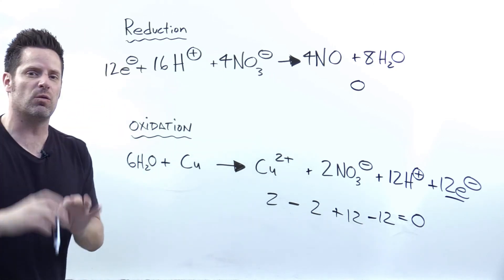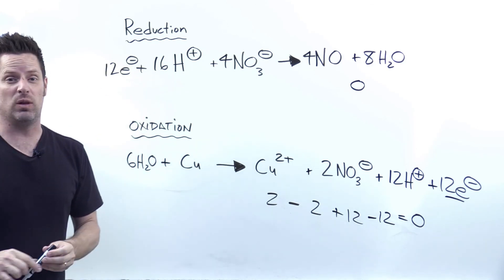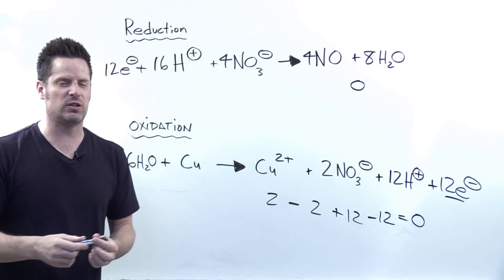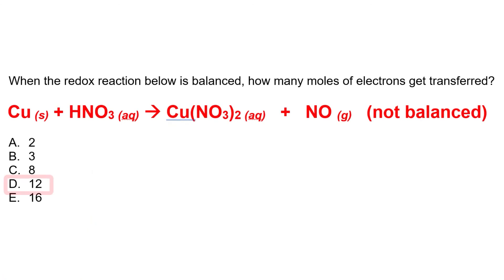Now, if I wanted to get a net reaction after all this process, I would just add the two together and cancel out like terms algebraically. In any event, this is the overall process in which you can see the total number of electrons transferred is 12 once you're all balanced, which is option D.